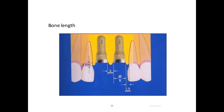This slide tells us how much distance to keep between implants and between an implant and a tooth. The distance between the implant and adjacent tooth should be at least 1.5 mm. The distance between two implants should be at least 3 mm. Always check and measure these distances — it is very important.